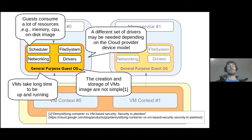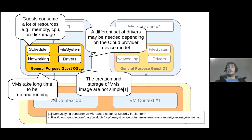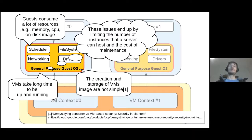However, a general-purpose OS consumes a lot of resources like memory, CPU, and disk. Also, the creation and storage of this sort of VM is complicated. For example, if the microservice is deployed in different cloud providers, different drivers should be packaged, because the device model for Amazon Web Services is not the same as Google Cloud Engine. Also, the VMs take too long to be up and running, which makes it hard to implement continuous integration and deployment of microservices. The result of consuming so many resources means we can only host a few virtual machines per host, and the maintenance of these VMs is high.